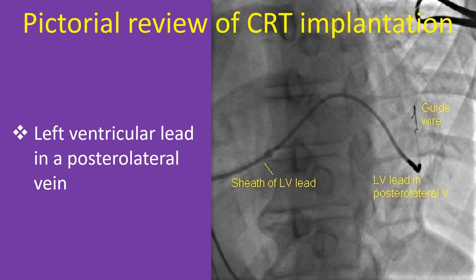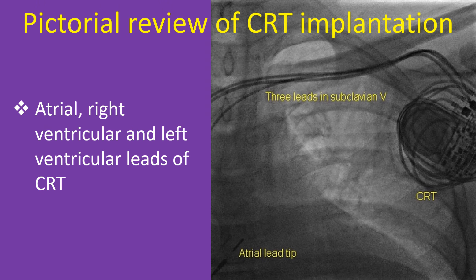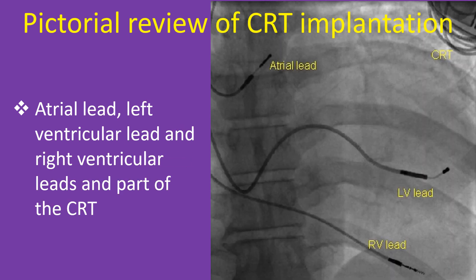The peel-away sheath can be split using the device provided in the kit once a stable lead position has been obtained and tested. The atrial lead can be introduced and positioned in the right atrial appendage. Proximal ends of all leads are connected to the appropriate ports of the CRT device. Three leads are seen in the left subclavian vein. The tip of the atrial lead is seen in the lower right corner. Redundant lead loops and the CRT device are seen in the left upper corner. The final picture after implantation shows both ventricular leads, the atrial lead, and part of the device in the upper left corner of the image.